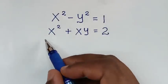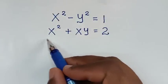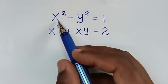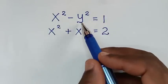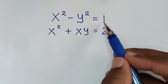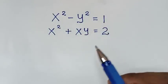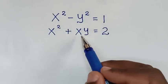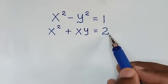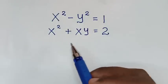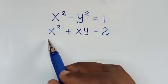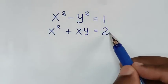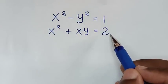Hello, you are welcome to solve this math problem, which is x squared minus y squared is equal to 1, and x squared plus xy is equal to 2, to find the values of x and y from these two systems of equations.